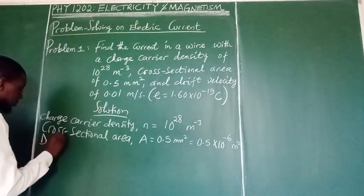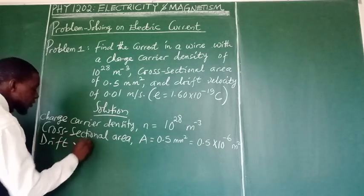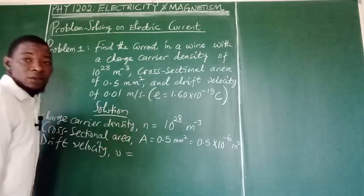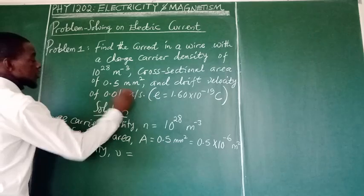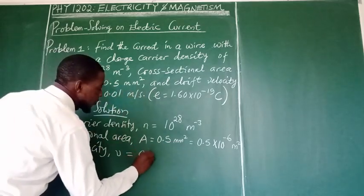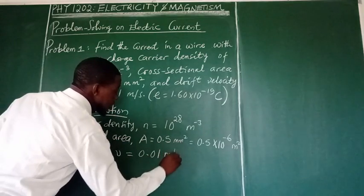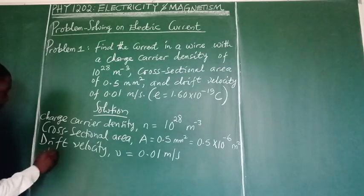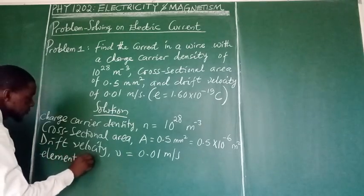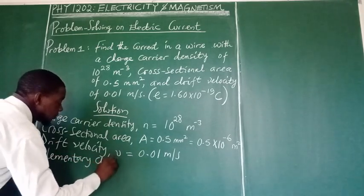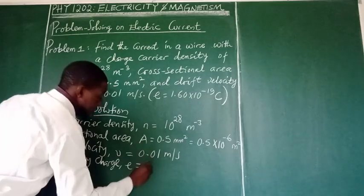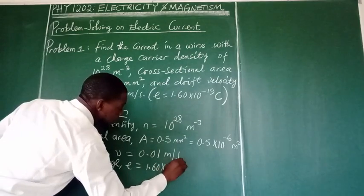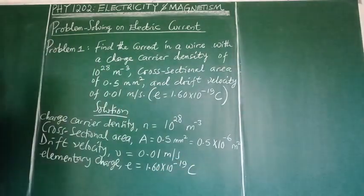And the drift velocity. We are given the drift velocity V equals, look at the drift velocity here, 0.01 meters per second. Finally, we are told that our elementary charge E is 1.60 times 10 to the power of negative 19 coulomb.